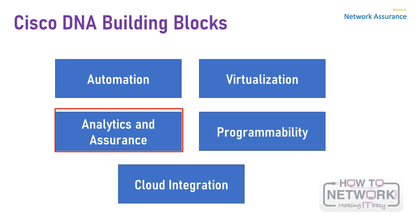The second building block is analytics and assurance. To survive the digital transformation, you need data on where your users are connecting, how they're connecting, which applications they're using, what their connection times are, and much more. You need this data promptly, in hours rather than days. You also need to analyze the data. The network must have pervasive analytics to provide insights into the operation of the network, IT infrastructure, and the business — information that only the network can provide.